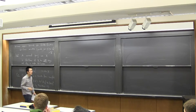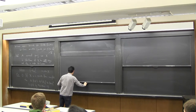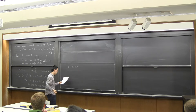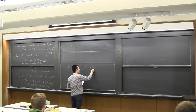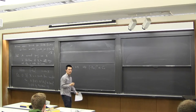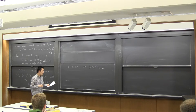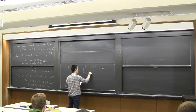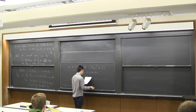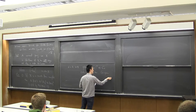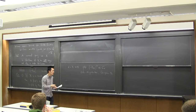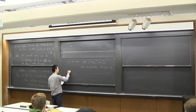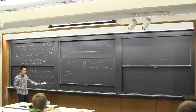Starting from dimension 4, the volume of X can be larger than the volume of P^n. If the dimension of X is at least 4, then we still have a uniform upper bound C_n of the volume depending on the dimension n. This is due to Campana in 1992. This C_n is a constant depending on the dimension, and there exist examples such that the volume is actually bigger than (n+1)^n.